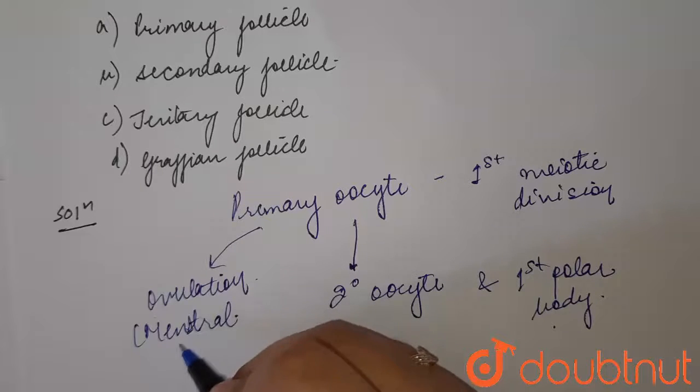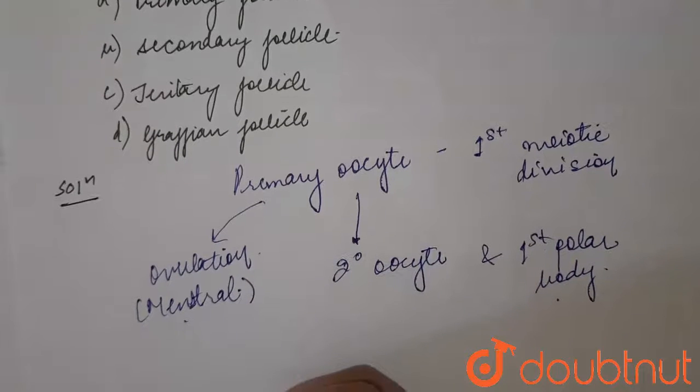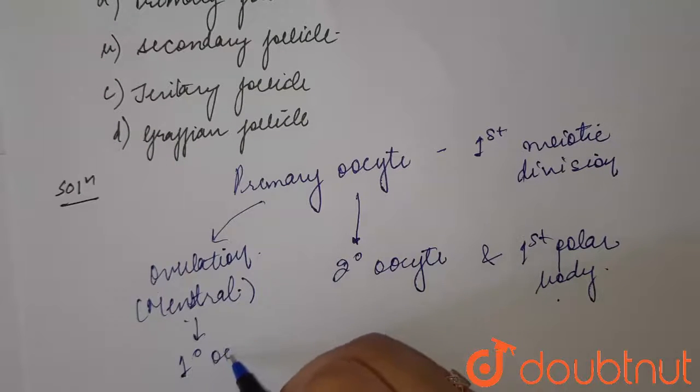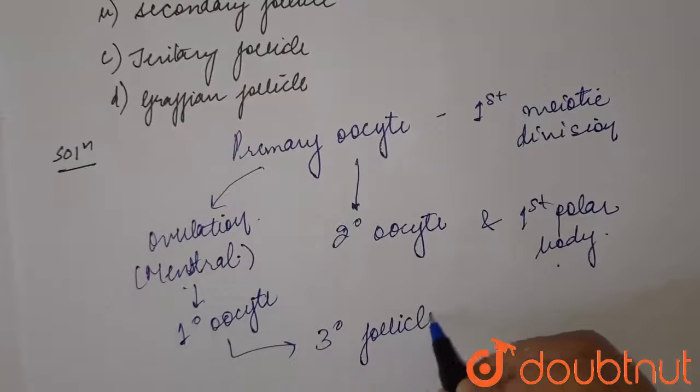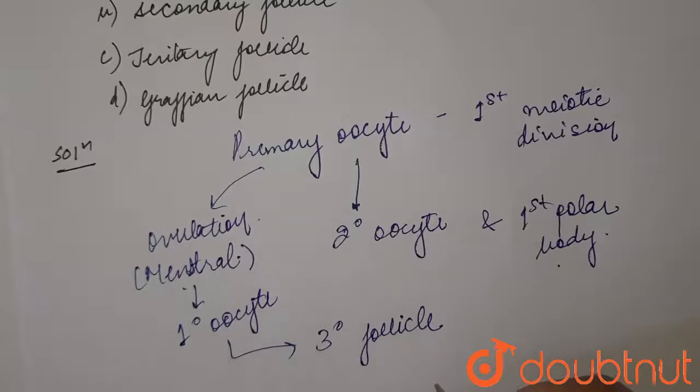During the menstrual phase in human females, this primary oocyte is present in the tertiary follicle. It's the stage of the Graafian follicles—primary follicle, secondary, tertiary, and then Graafian follicle.